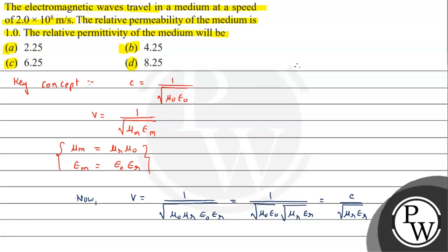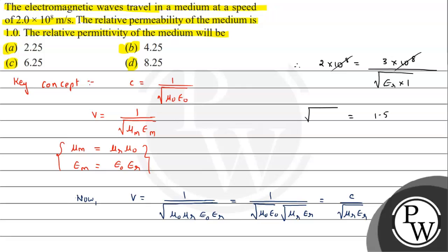Therefore, V = 2 × 10⁸, and that equals C = 3 × 10⁸ (speed of light in vacuum) divided by √(μ_R · ε_R). The relative permeability μ_R is given as 1, so it cancels. We get 1.5 = √ε_R, therefore ε_R = 2.25. So the answer is option A. I hope you understood the solution — all the best!